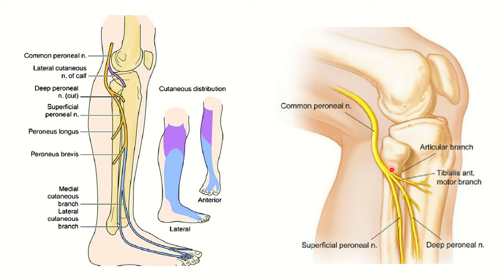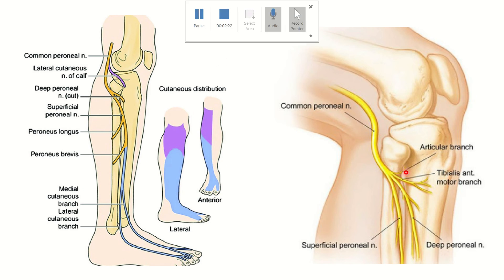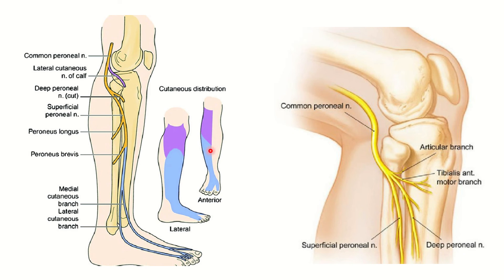Pressure on the common peroneal nerve may cause injury. In the first picture, we can see the common peroneal nerve going down and curving around the fibular neck. So it is very possible during long-term immobilization for pressure to occur in this area. We can see the common peroneal nerve dividing into the superficial peroneal nerve and deep peroneal nerve. Pressure at the neck of the fibula causes compression of the common peroneal nerve — this may occur with a long-term cast.